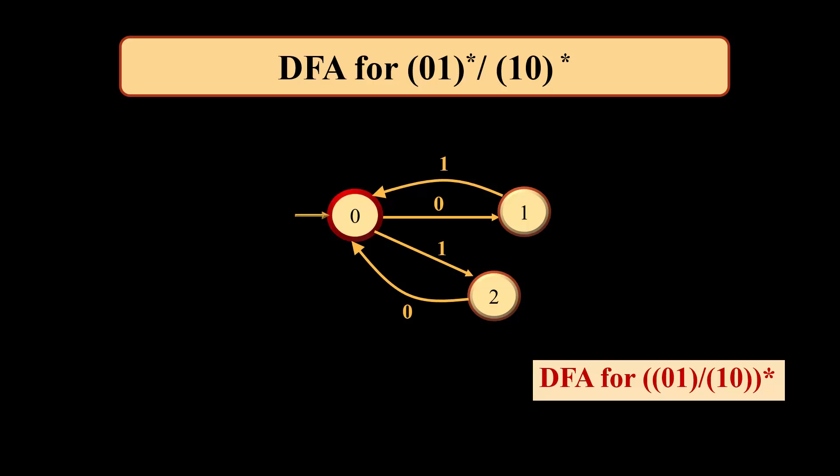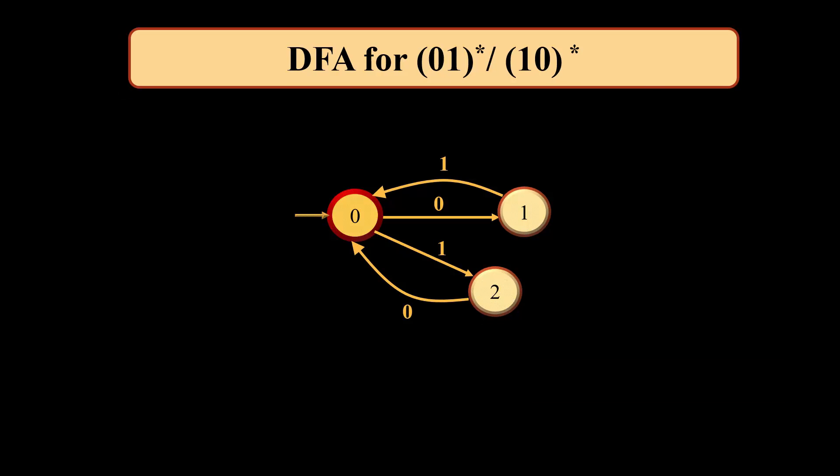If we have to design a DFA for (01)* or (10)*, the first machine that comes to mind is of a certain type. But when we analyze it, we identify that if we start off with 0 we move towards state 1 and come back to 0, covering 01. But then we can move on 1 from state 0 to state 2 and come back to 0 again. So this machine is not a DFA for (01)* or (10)* — instead, this is a DFA for (01 or 10)*.